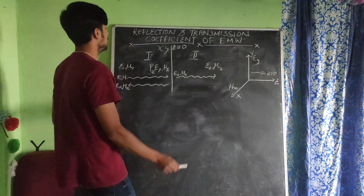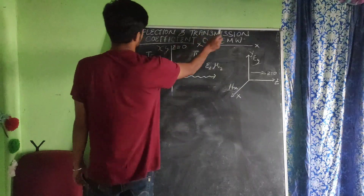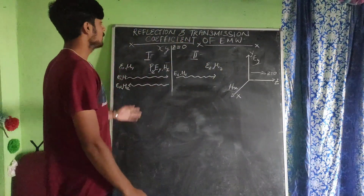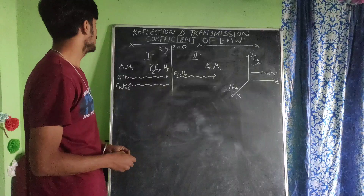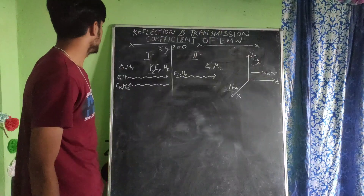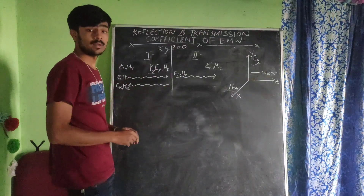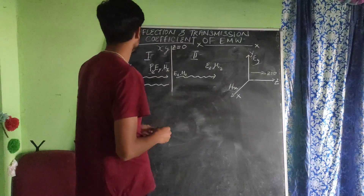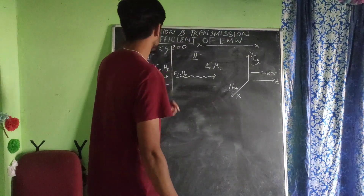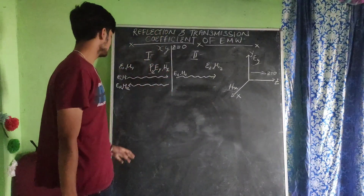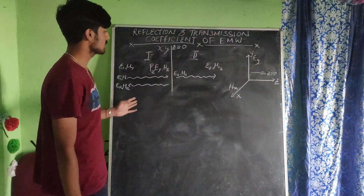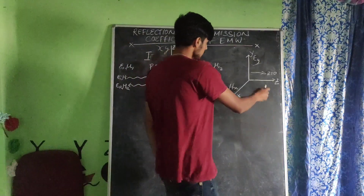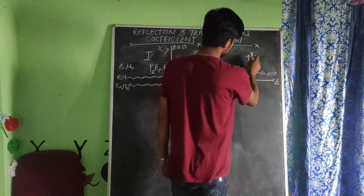Now let us start our topic, that is reflection and transmission coefficients of electromagnetic waves. As the topic already says — reflection and transmission — we know that when an electromagnetic wave travels from one medium to another, some of its wave gets reflected back and some gets transmitted through the medium.